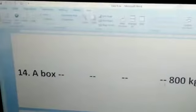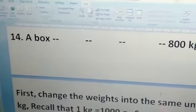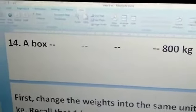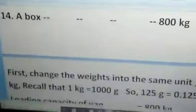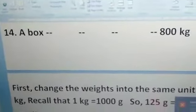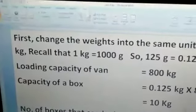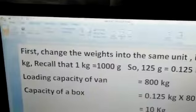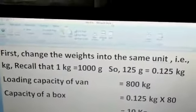Next, question number 14 says a box contains 80 packets of biscuit. There is a box, big boxes there and that box contains 80 packets of biscuit and the weight of each packet of biscuit is 125 grams. You have to find how many such boxes can be loaded in a van which can carry a maximum load of 800 kilogram. Again, there is a difference of unit.